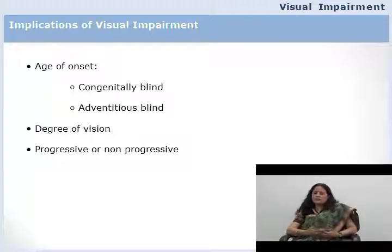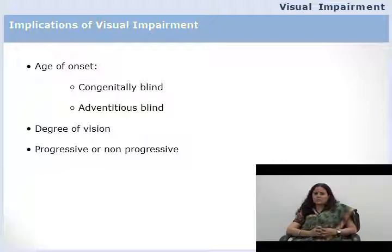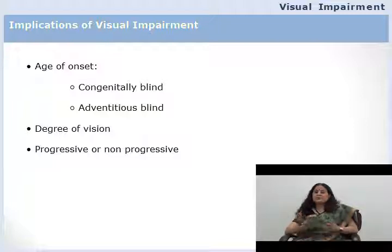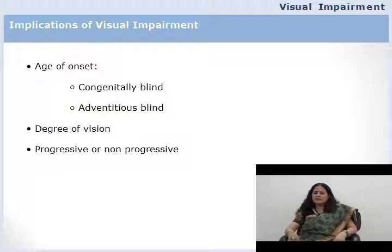Visual impairment brings with it many implications. The most devastating fact for a blind person is that their world becomes dark and they feel very insecure, which affects their mobility greatly. Their range and variety of experiences becomes limited — they can never appreciate a beautiful scenery, cannot understand the depth of an ocean or the enormity of a mountain. They lose control over their environment; for example, a totally blind teacher would not know if students quietly walked out of the class.